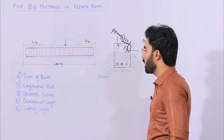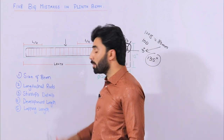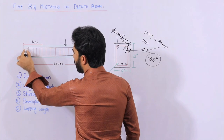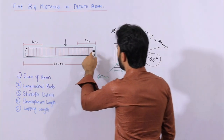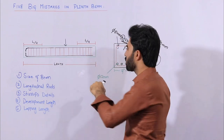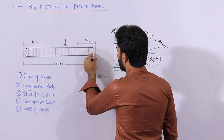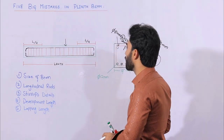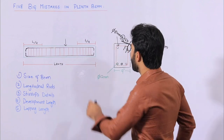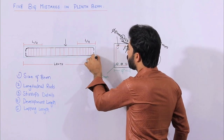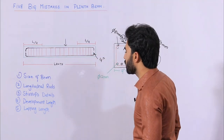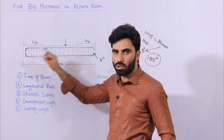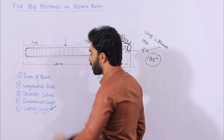The fourth mistake is development length. Most people don't know what development length is. You can see the longitudinal bar — development length is very important. In most construction you can see people leave the bar straight at the end, which is the wrong way. It should be bent to provide development length, which creates a good bond between steel and concrete. If the beam depth is 12 inches, you should keep the development length at minimum 3 to 4 inches. Don't leave it straight — always provide the development bend.